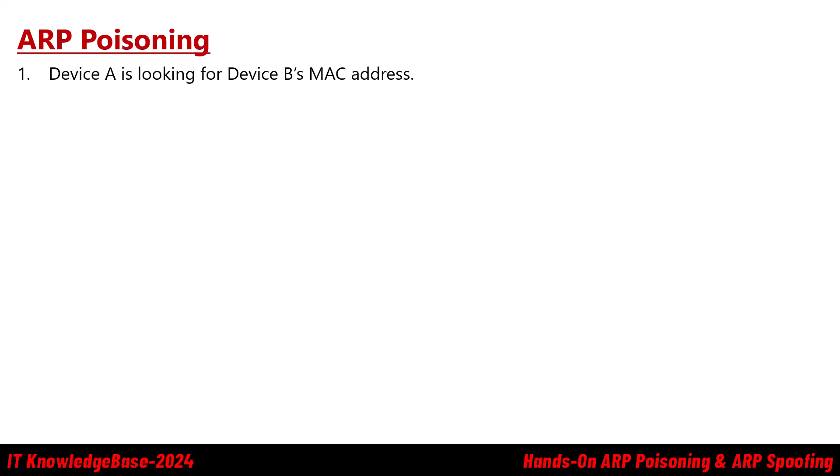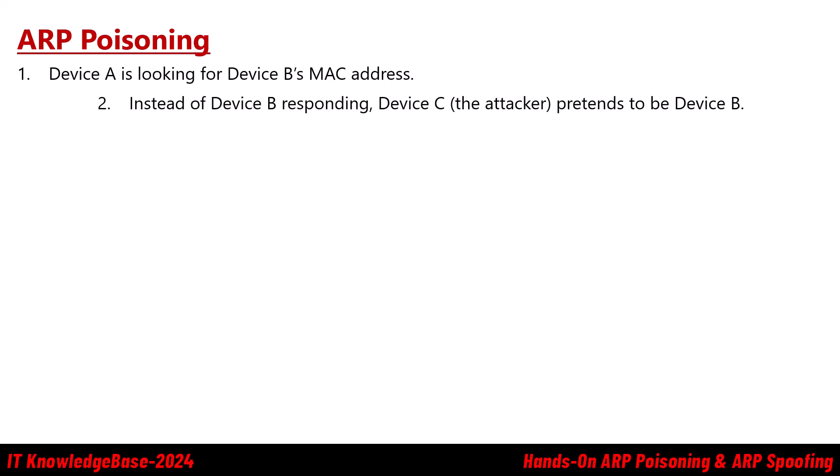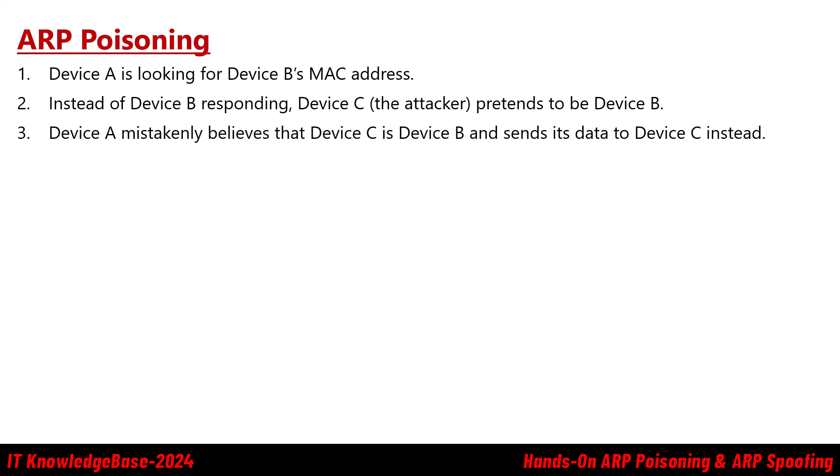ARP poisoning is a type of attack where Device A is looking for Device B's MAC address. Instead of Device B responding, Device C — the attacker — pretends to be Device B and says 'I am Device B and here's my MAC address.' As a result, Device A mistakenly believes that Device C is Device B and sends its data to Device C instead.